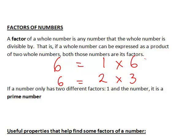However, if a number only has two different distinct factors, 1 and the number itself, it is a prime number. For instance, 5 can only be written as 1 times 5, and hence it is a prime number.